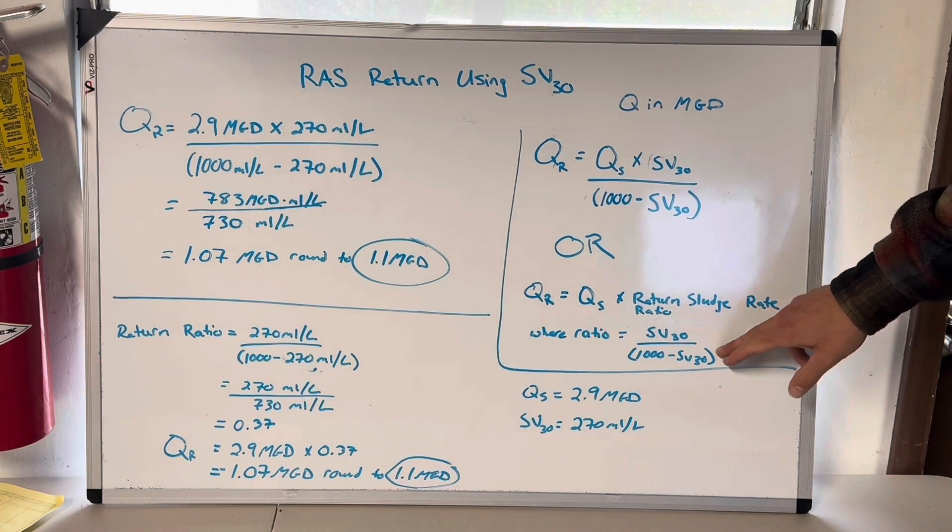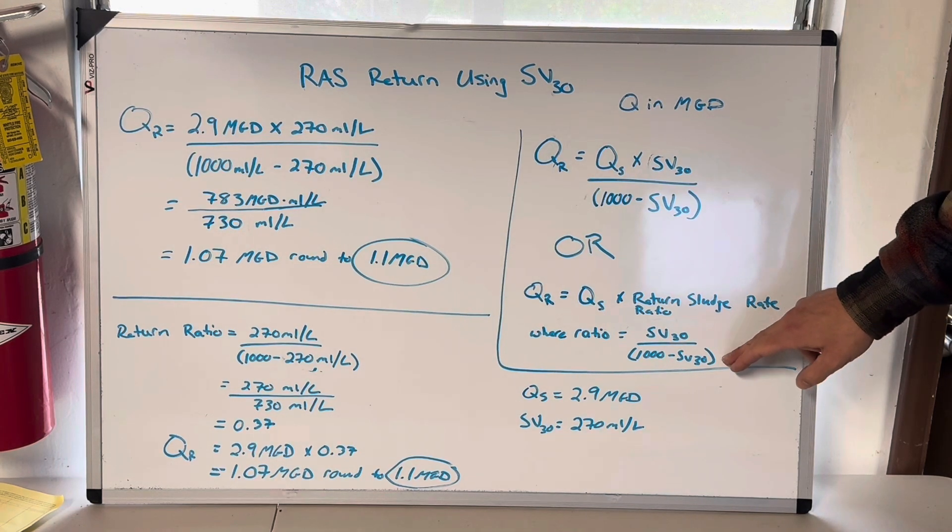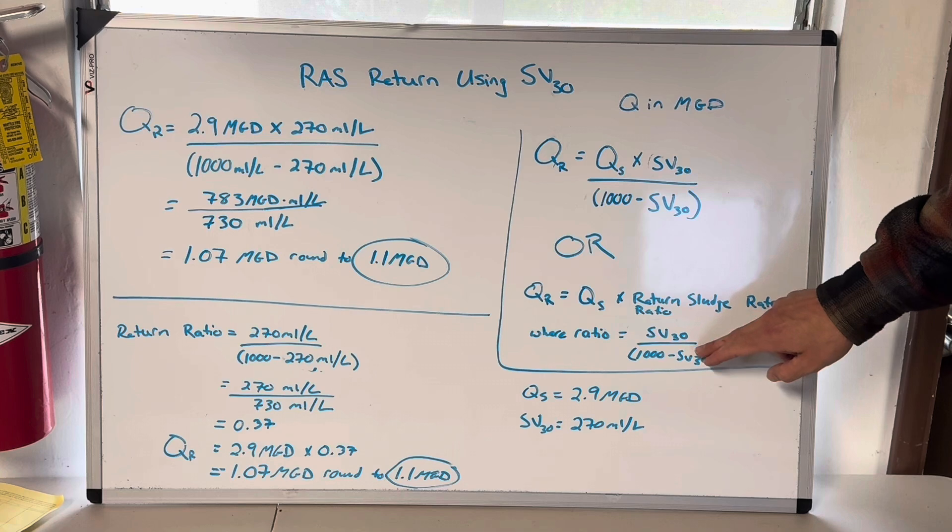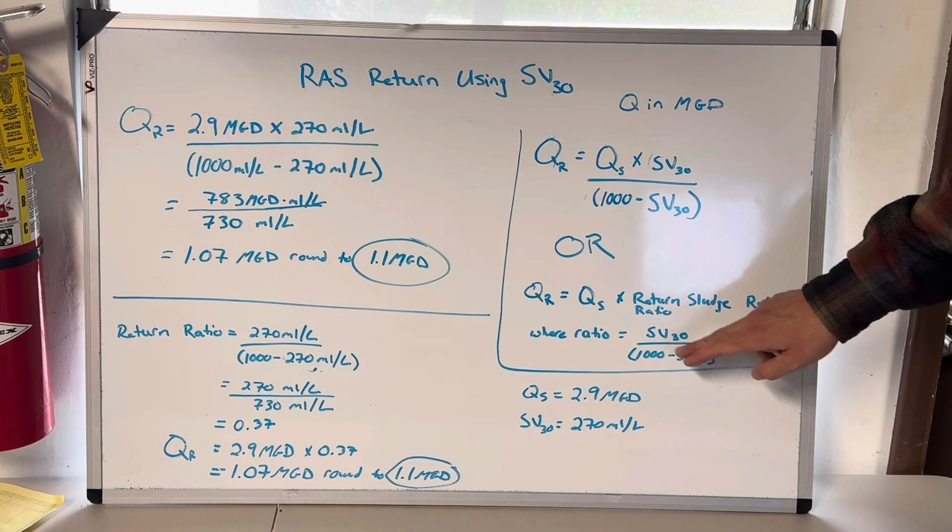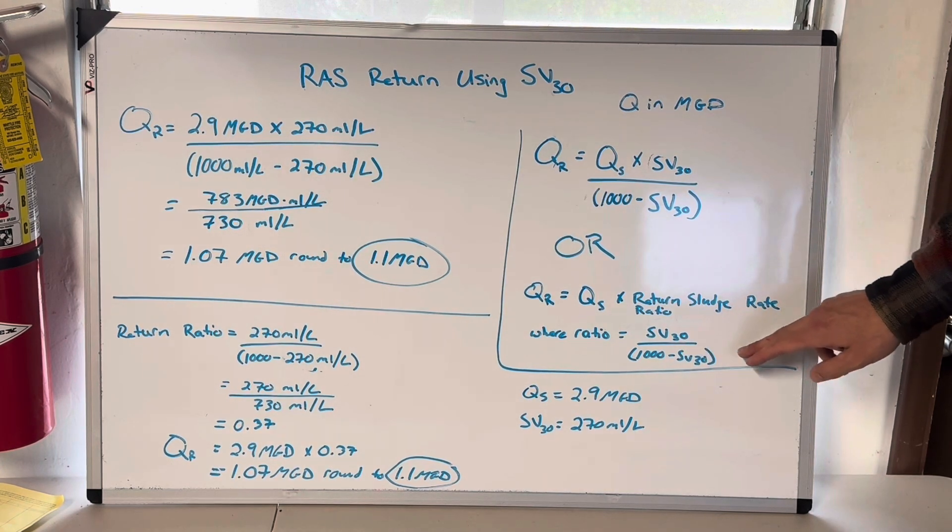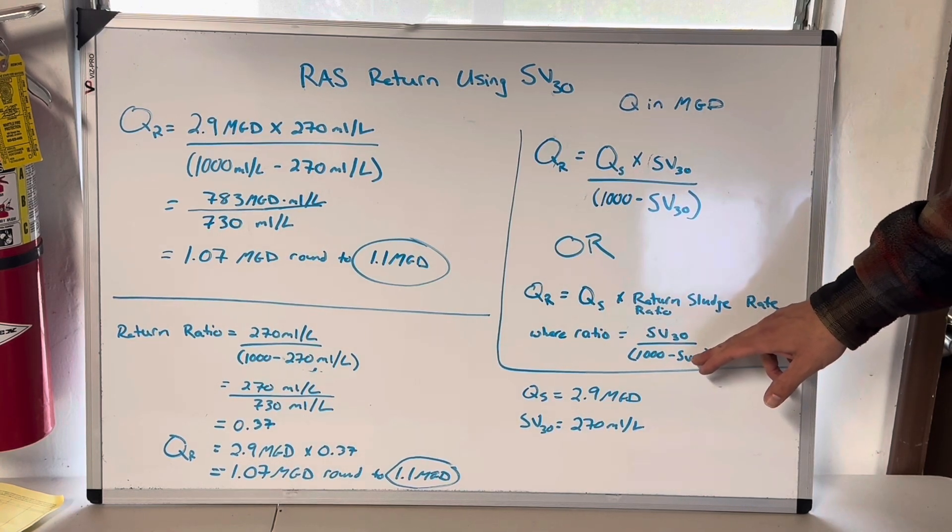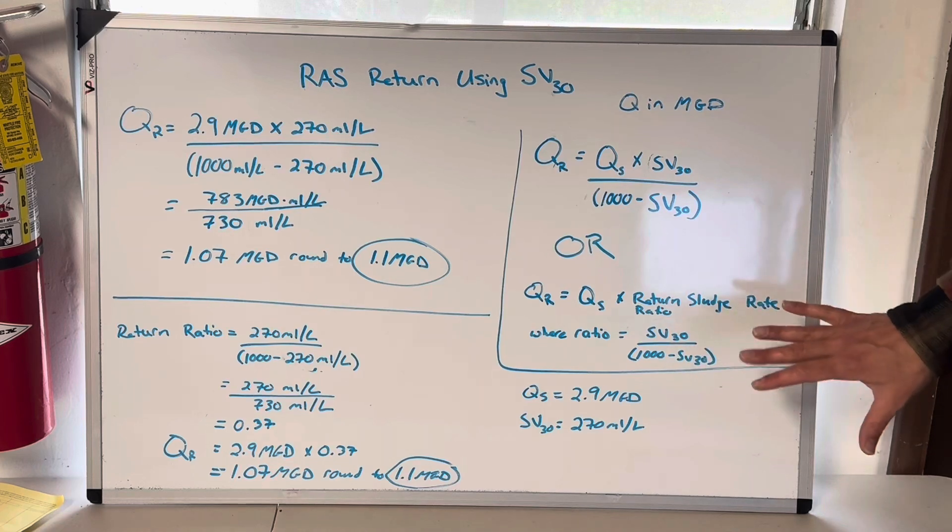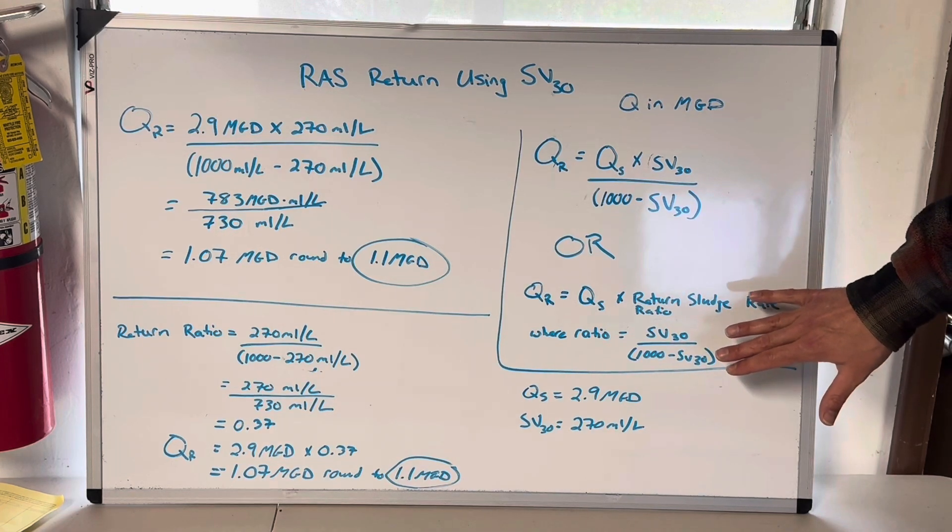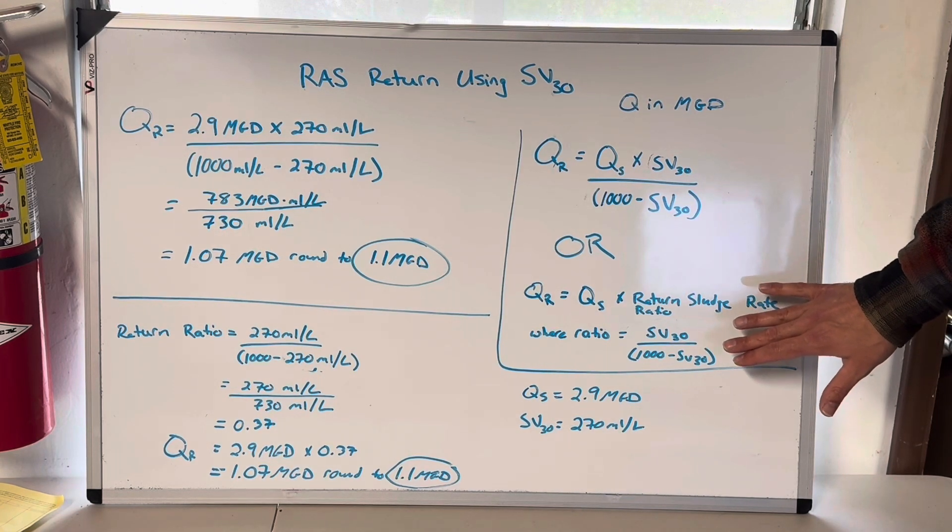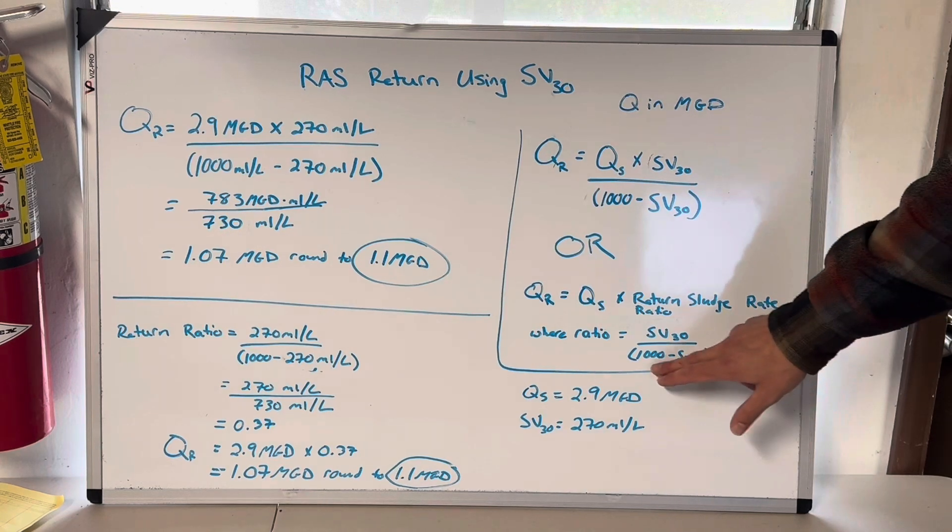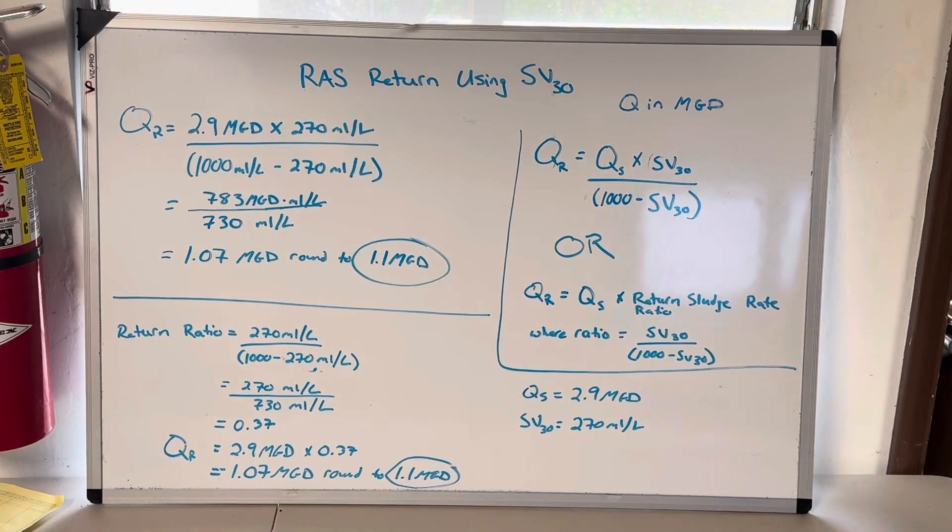By the way, I've seen this written on conversion sheets where it says SV30 divided by the clear water or clear effluent in milliliters per liter. Well, they're not giving you everything. What they're telling you is, I guess that what they're doing here is you need to already know that this is a one liter sample. So if you see it written like that, just remember that's 1000 minus SV30. Please ask questions if that was a little over your head or you need me to explain that a little differently.